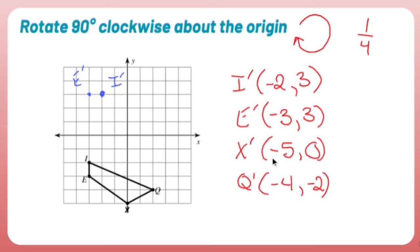X prime has me going from the origin moving 5 to the left and then don't move at all. So 1, 2, 3, 4, 5. Don't move at all. And Q prime has me going left 1, 2, 3, 4, down 1, 2, right next to my original I.